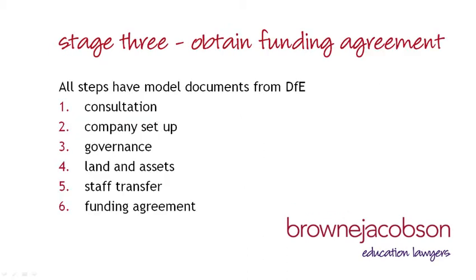Stage 3 is the critical legal part of the process. All of these legal steps, save for stakeholder consultation, are supported by model documents issued by the DfE. Whilst the department is not keen on changes to these documents, it is important that schools are well advised so that if there are any particular issues, appropriate changes can be agreed with the DfE. In summary, you're going to need to establish an Academy Trust, transfer all staff, land and assets to the Academy Trust, and then enter into a funding agreement for the operation of the school as an academy in return for the DfE agreeing to fund you as a state funded independent school.